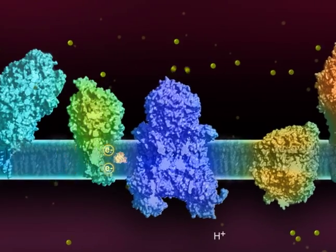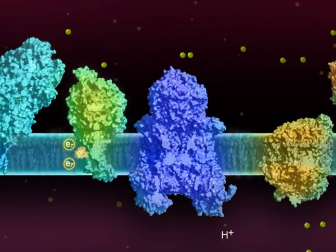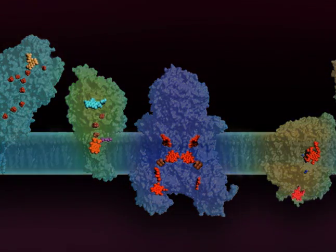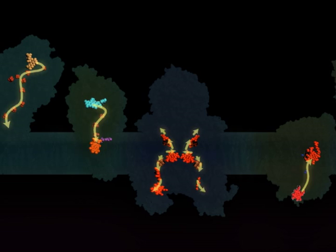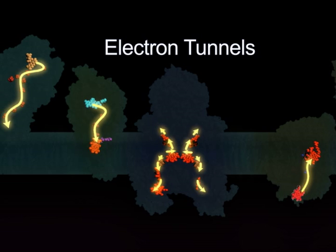It does this by catalyzing a series of redox reactions at different areas within the protein. These areas, called redox centers, are located close enough together to allow electrons to shoot from one center to the next in milliseconds, creating an electron tunnel that shuttles electrons through the protein.